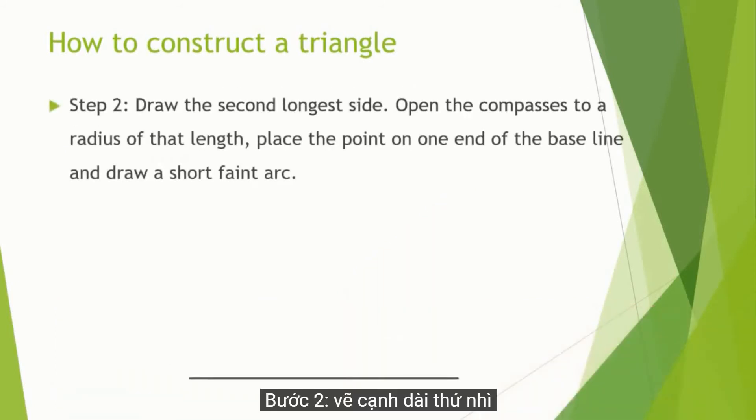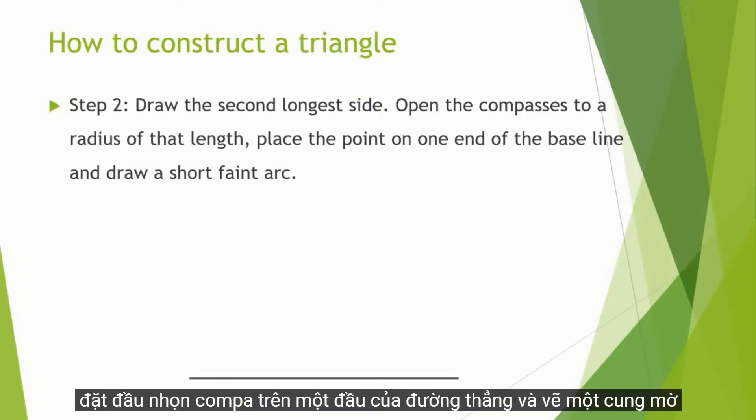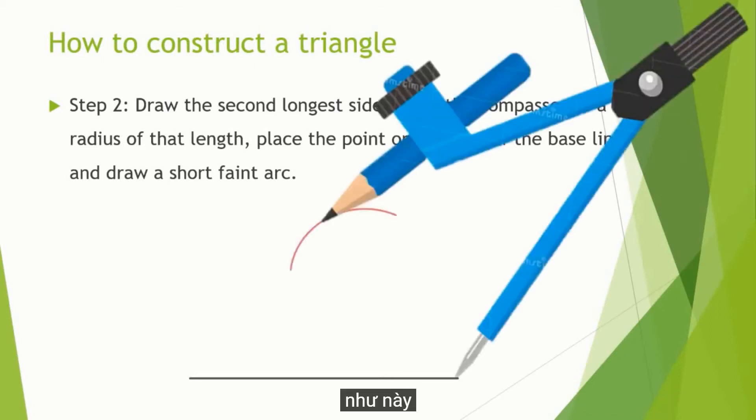Step 2: Draw the second longest side. In this case, the 5cm side. Open the compasses to the radius of 5cm. Place the point on one end of the 6cm line and draw a short faint arc.